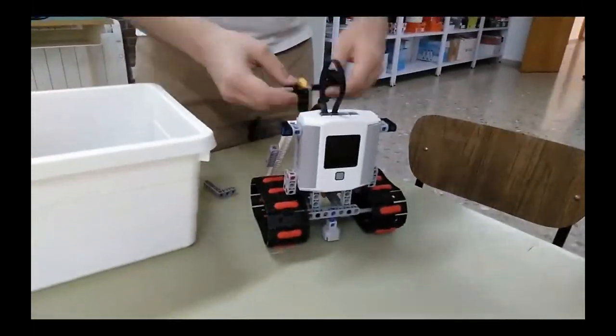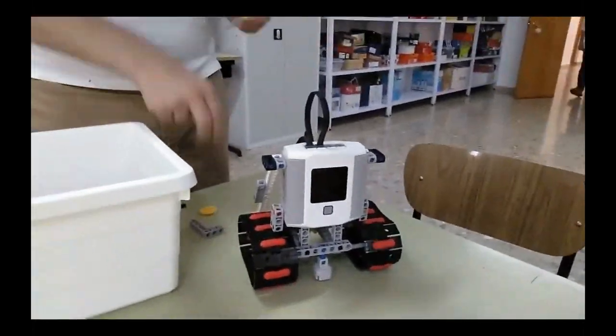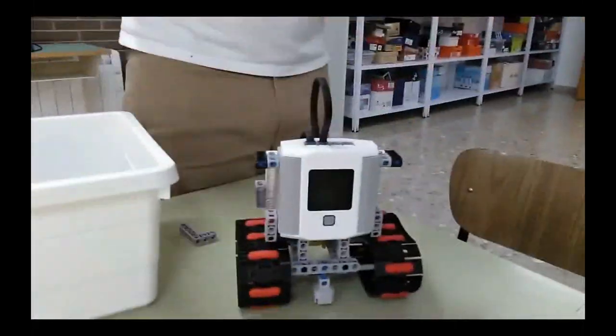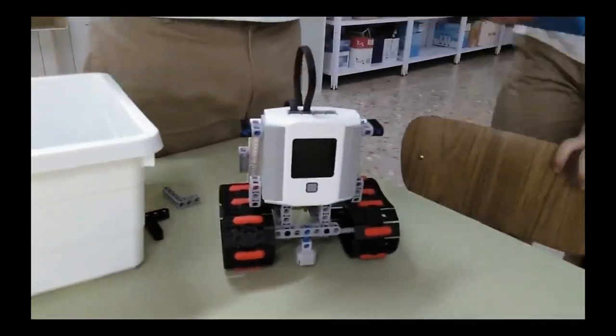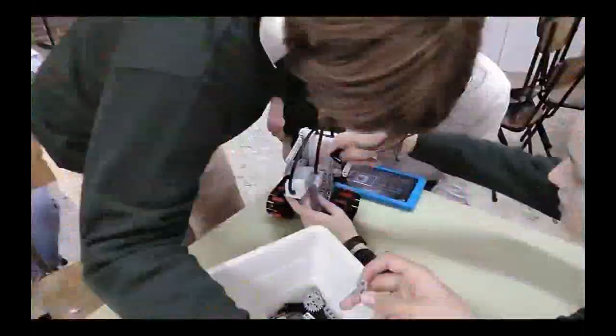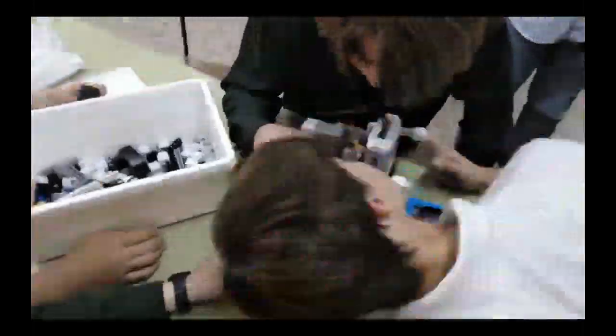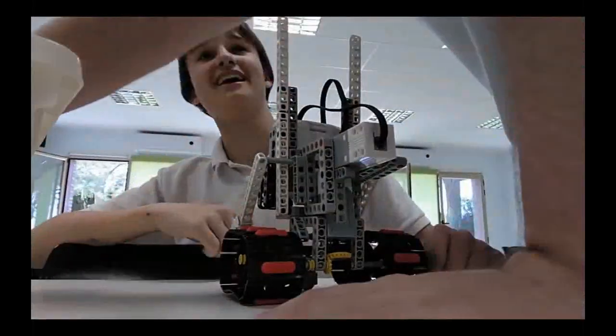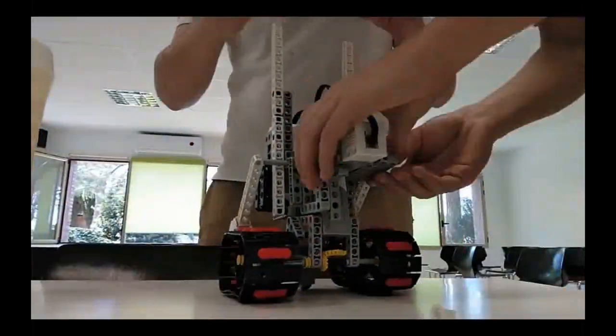El robot está compuesto principalmente por dos brazos y dos Orugas, utilizando un motor para cada par, permitiendo un movimiento independiente entre ellos. El movimiento de los brazos es arriba y abajo, y el movimiento de las Orugas, adelante y atrás. A día de hoy, no permite giros.